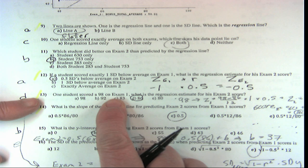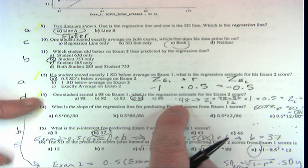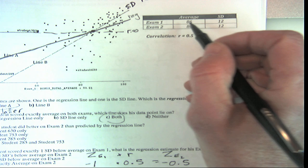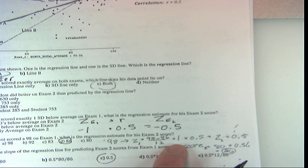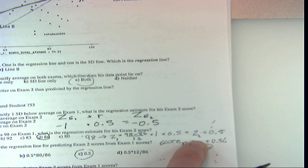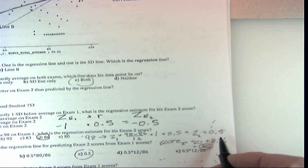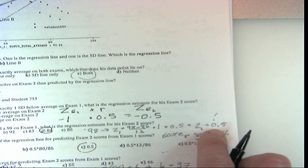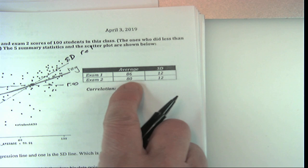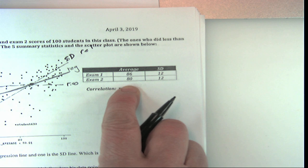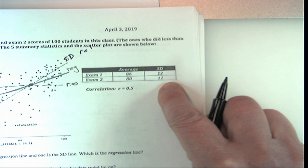Now, what if you're given a value on exam one and want to do an estimate? We call this the three-step process: take the value, change it to a z-score by subtracting off its average—here we subtract off 98—and divide by its standard deviation. That gives a z-score of one; multiply by r and that gives the z-score for the second variable, which was 0.5. To get the actual value, start at the average of exam two and add half a standard deviation—the answer is 86.